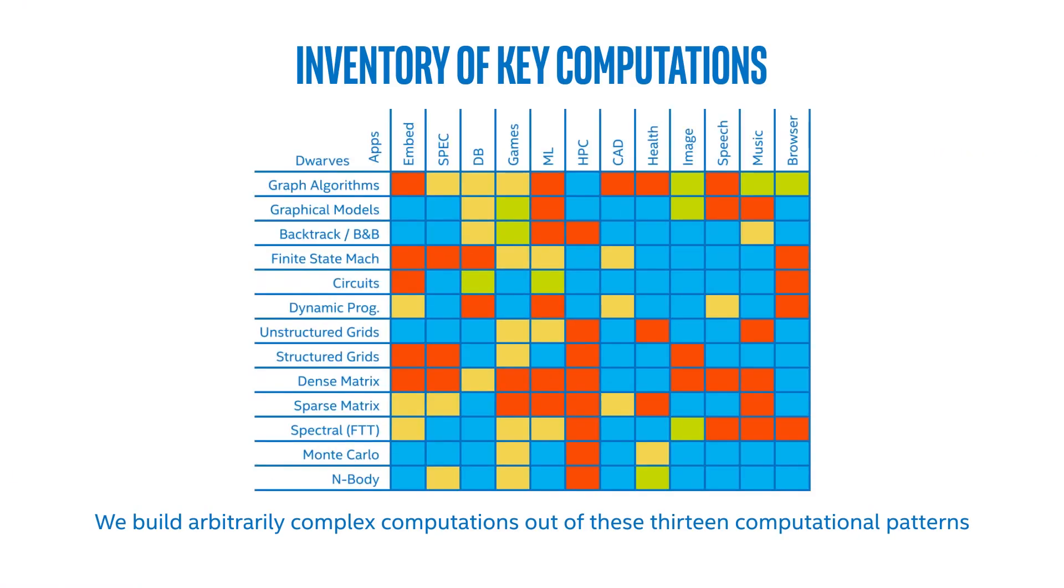Next, let's consider computational patterns. So here again is our inventory of computations. Today we're going to be talking about structured grid and two varieties of matrix operation: dense matrix and sparse matrix.